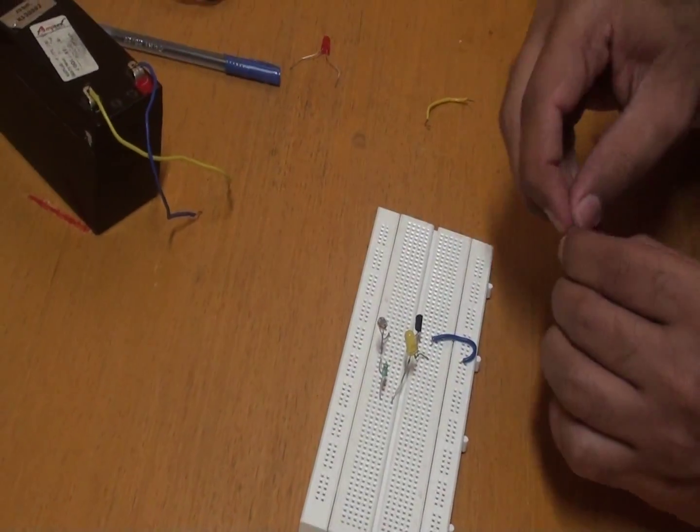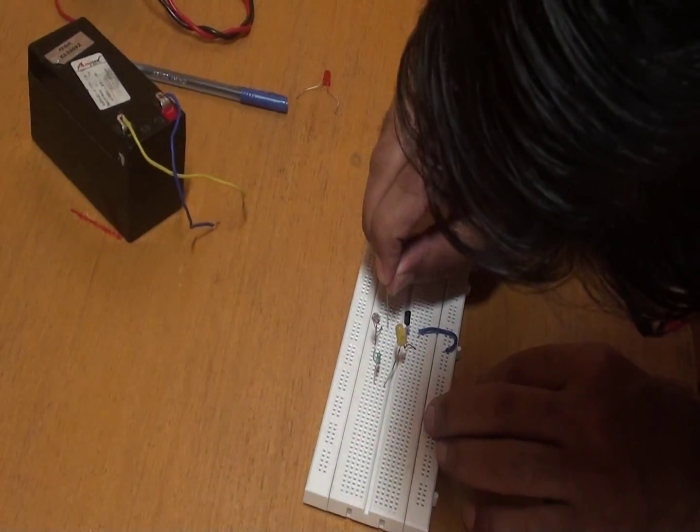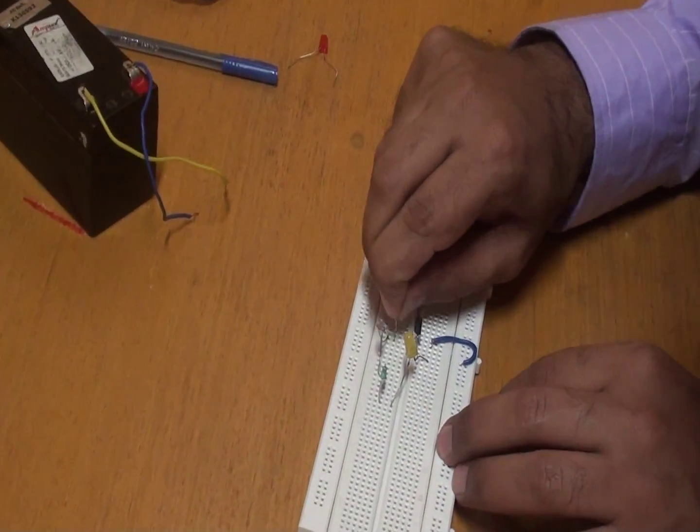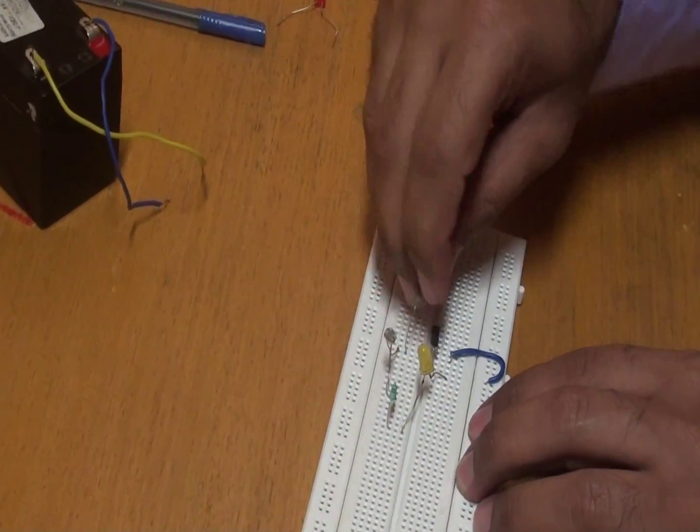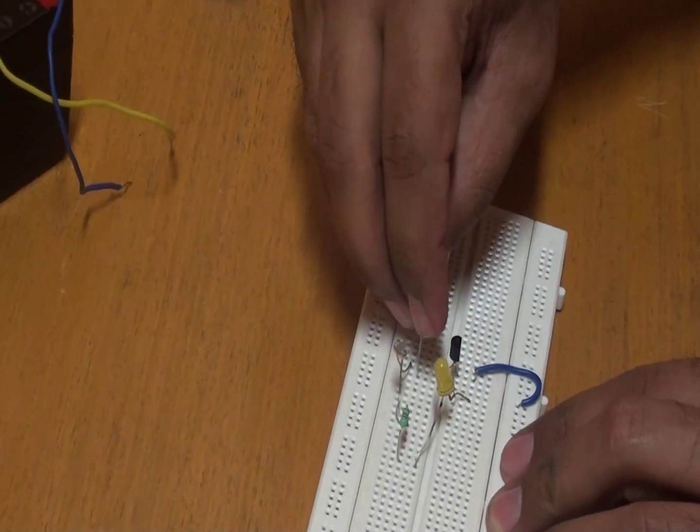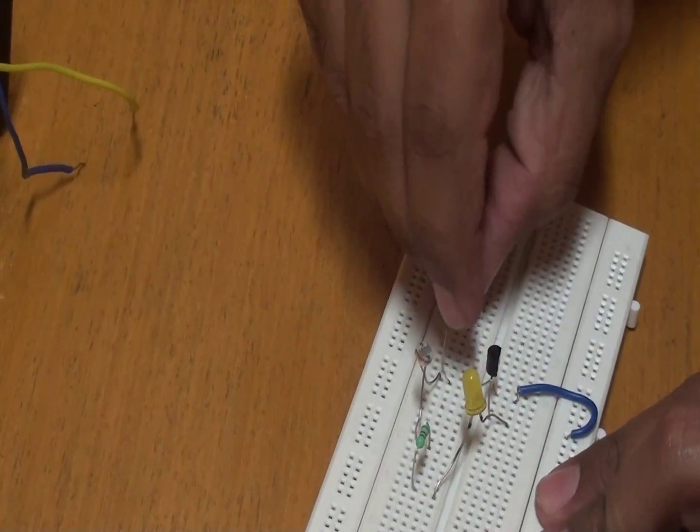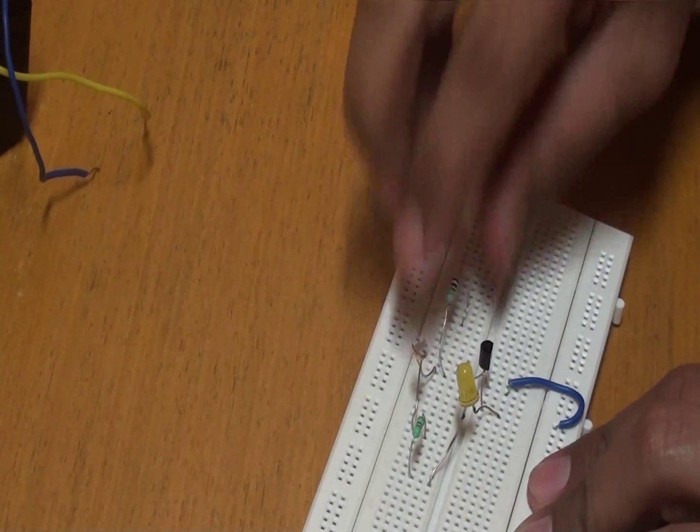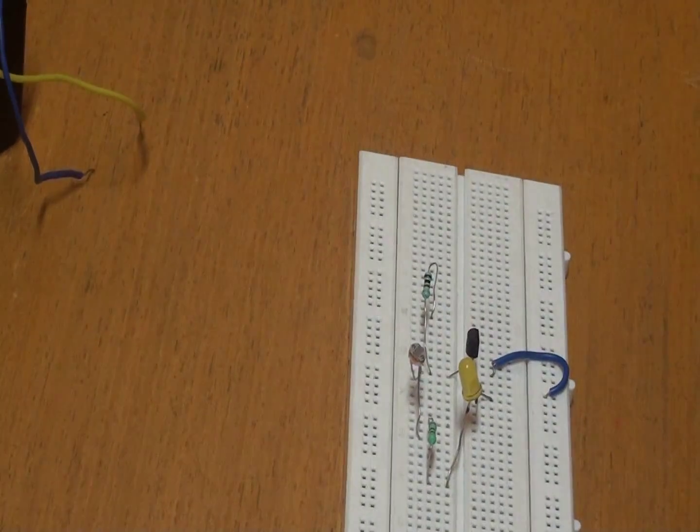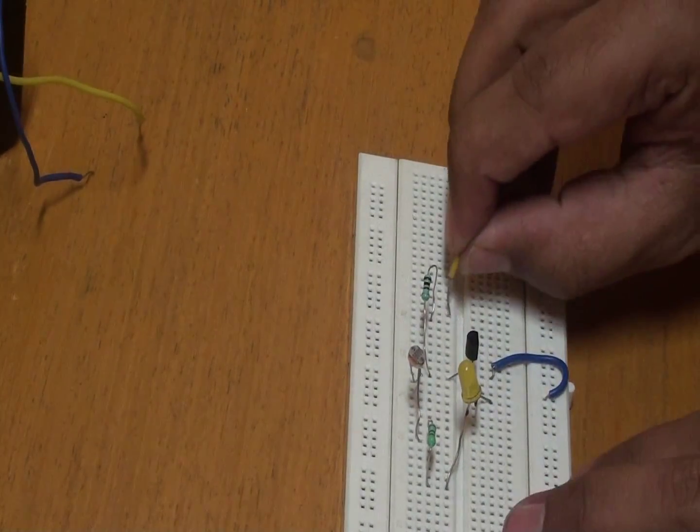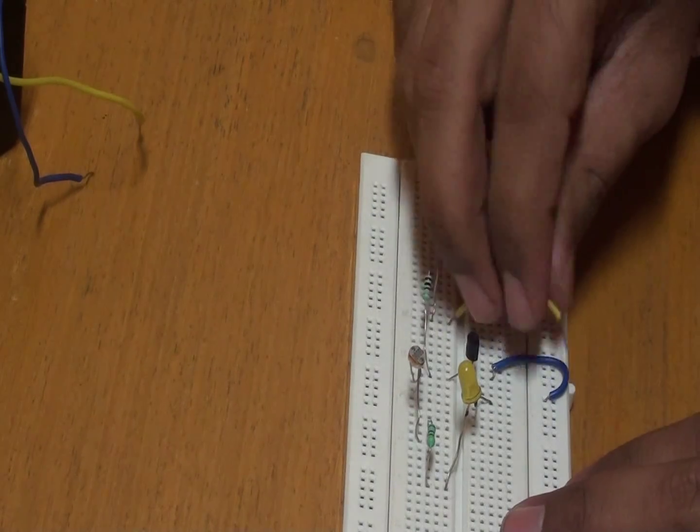So now we connect our 4.7 kilo ohm resistor. And this is given to the base of the BC547 transistor. And the other end of the resistor is given to ground.